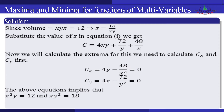We compute C_x = 4y − 48/x² and set it equal to 0. Similarly, C_y = 4x − 72/y² and set it equal to 0. Solving these two equations, we get x²y = 12 and xy² = 18.